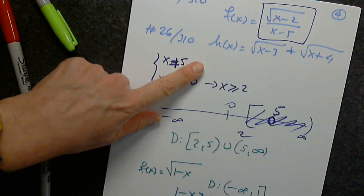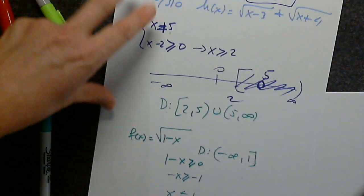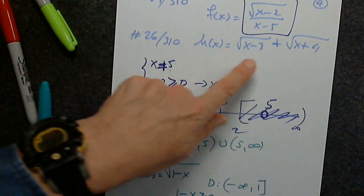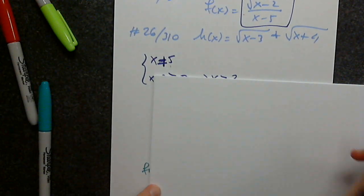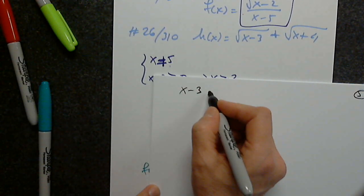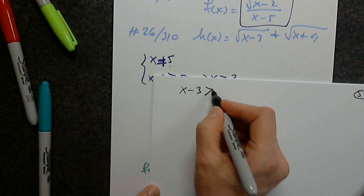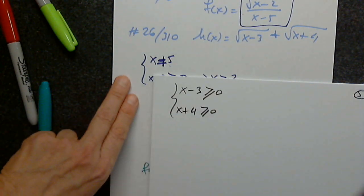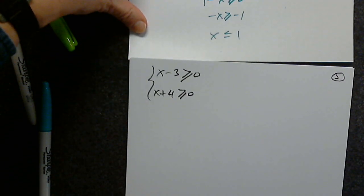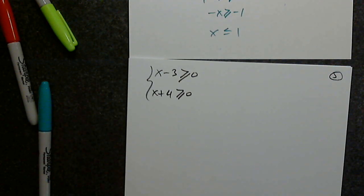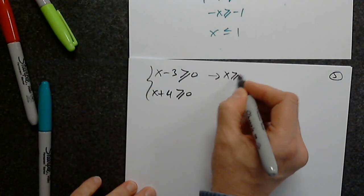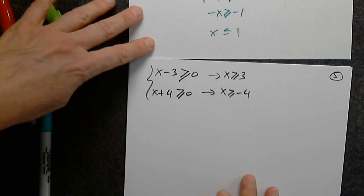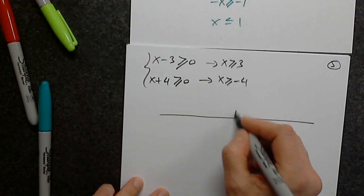Let's work on number 26: h(x) = √(x - 3) + √(x + 4). Can anyone give the two conditions? The first condition: x - 3 ≥ 0, so x ≥ 3. The second: x + 4 ≥ 0, so x ≥ -4. Now I have two inequalities to solve.